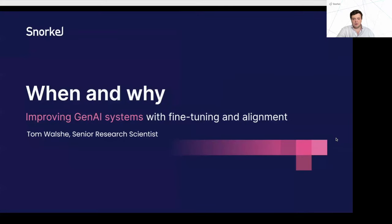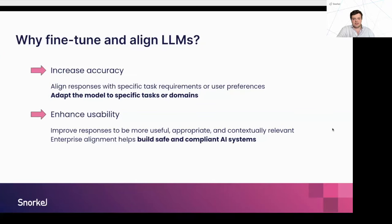When and where should you use fine-tuning, and when should you start thinking about it? For a lot of tasks, off-the-shelf models can do pretty well in generalist use cases. However, when you're looking at enterprise use cases, you really need to specialize the model to get accuracy gains above an acceptable threshold. We see fine-tuning as part of the puzzle to help increase downstream accuracy and adapt models to specialized tasks or domains where web-scale data doesn't get you the performance you want. We're also looking to improve models with respect to user preferences — internal or public-facing — all under the umbrella of enhanced usability: systems that are useful, appropriate within enterprise context, safe, compliant, and performant.